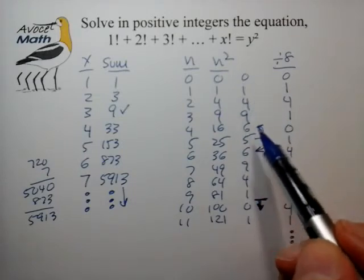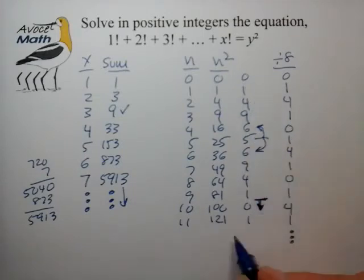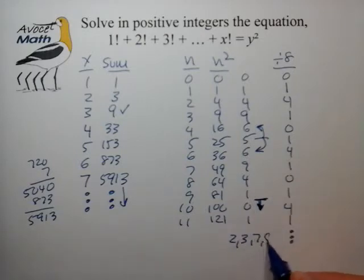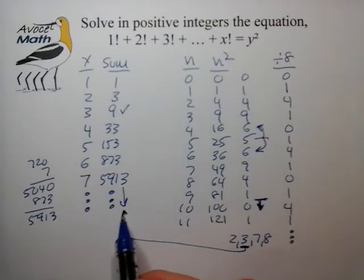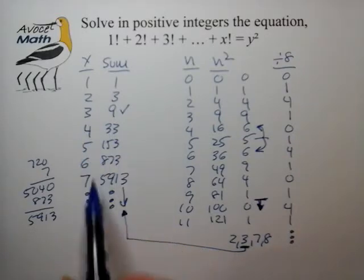And we have a similar case here for the remainder upon division by 10 which is essentially the units digit. It can be 1 or 4 or 9 or 6 or 5 but it can't be 2 or 3 or 7 or 8. So it looks like 3 is excluded as a possibility for a square number and that kind of matches up with the units digit on the left here for 4 factorial and beyond.